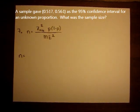For number 7, the question asks us to go backwards. We're given a confidence interval for a proportion, and we're asked to solve for the sample size. The sample size is what we normally denote as n.